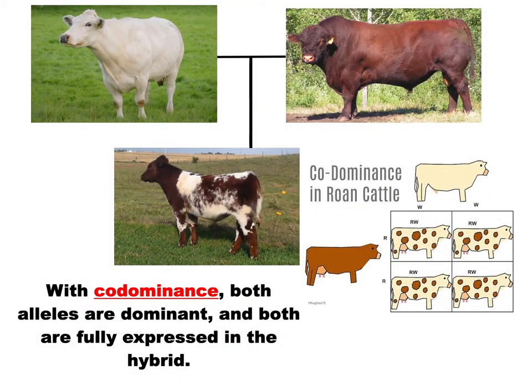This is similar but different — it's called co-dominance. Each allele doesn't just express a little; they completely express. So instead of a blended cow, we end up with cows that are speckled. In certain parts of the cow, one gene expresses, and in other parts, the other gene expresses. This is a famous example in roan cattle: you start with a white one and a brown one, and you end up with a brown-and-white speckled cow.